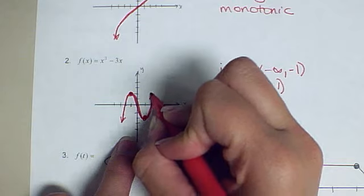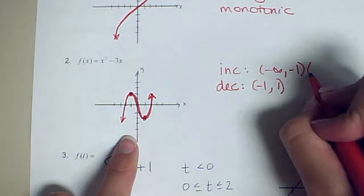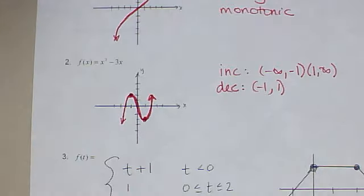At 1, it changes direction again and begins to increase. So again, it's increasing from 1 to infinity. This one is not monotonic because it is both increasing and decreasing.